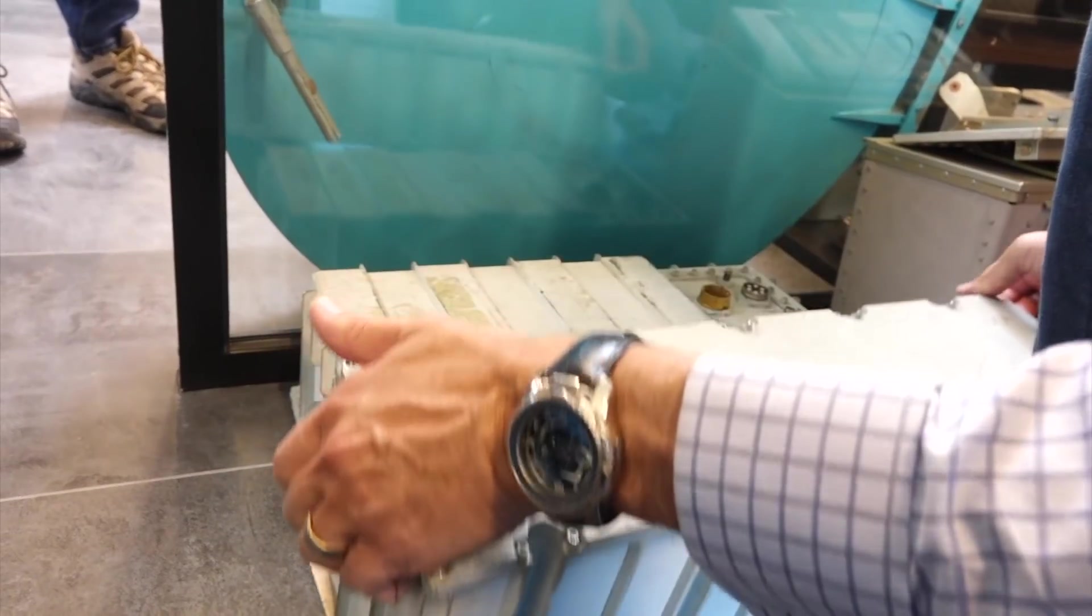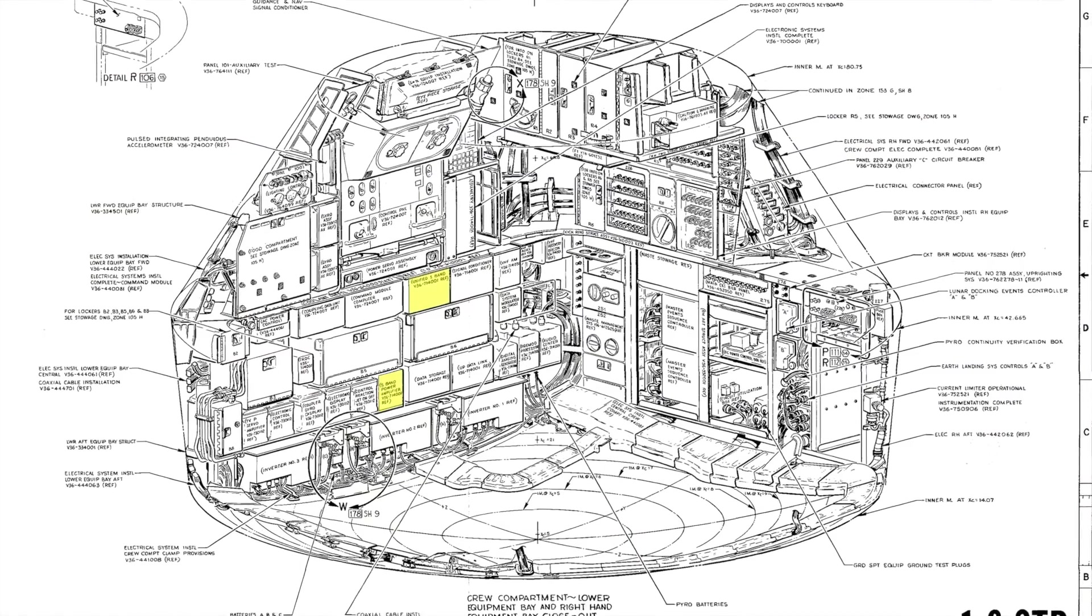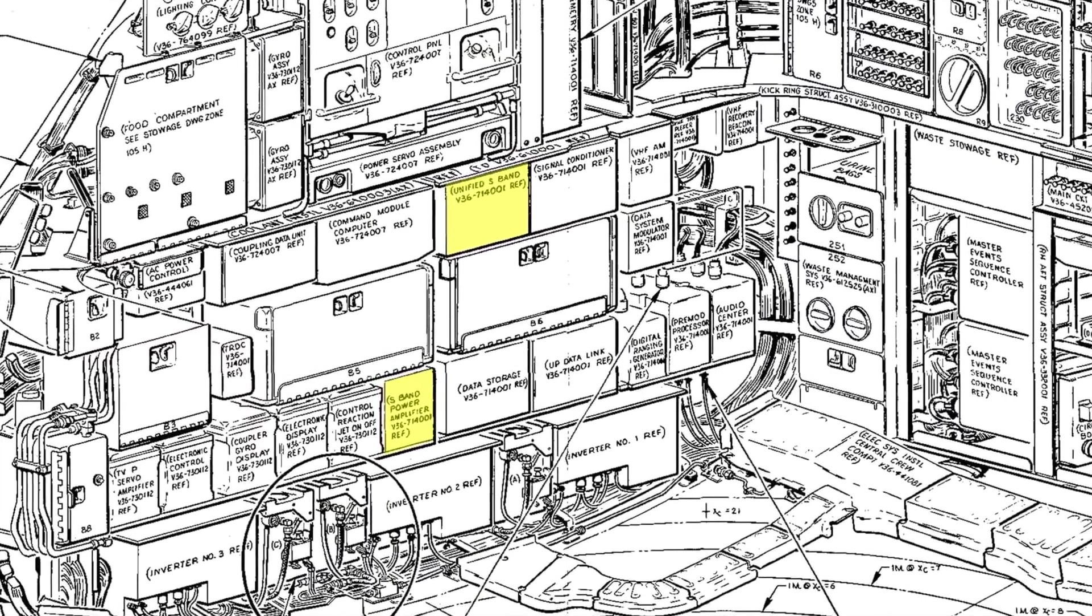These are the boxes that brought you voice, data and live TV from the Moon, and should be early masterpieces of microwave electronics, the blackest of black arts in analog electronics.